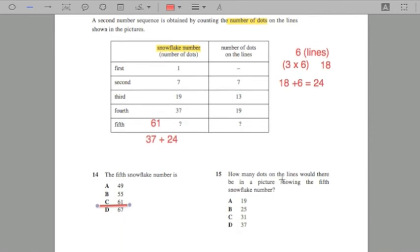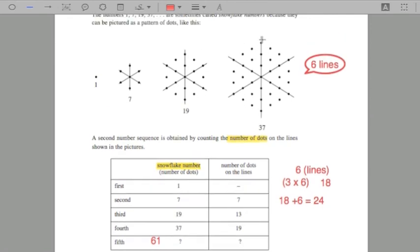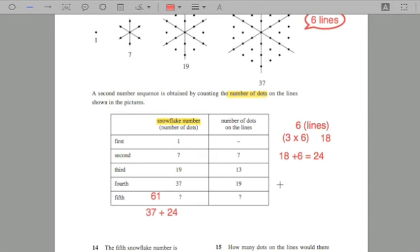Question 15. How many dots on the lines would there be in a picture showing the fifth snowflake number? The easiest way to do this because there's not much, and if you have time, you can just count it. So you know that there's one, two, three. Actually, the easiest way to do this is we know that there's 19.